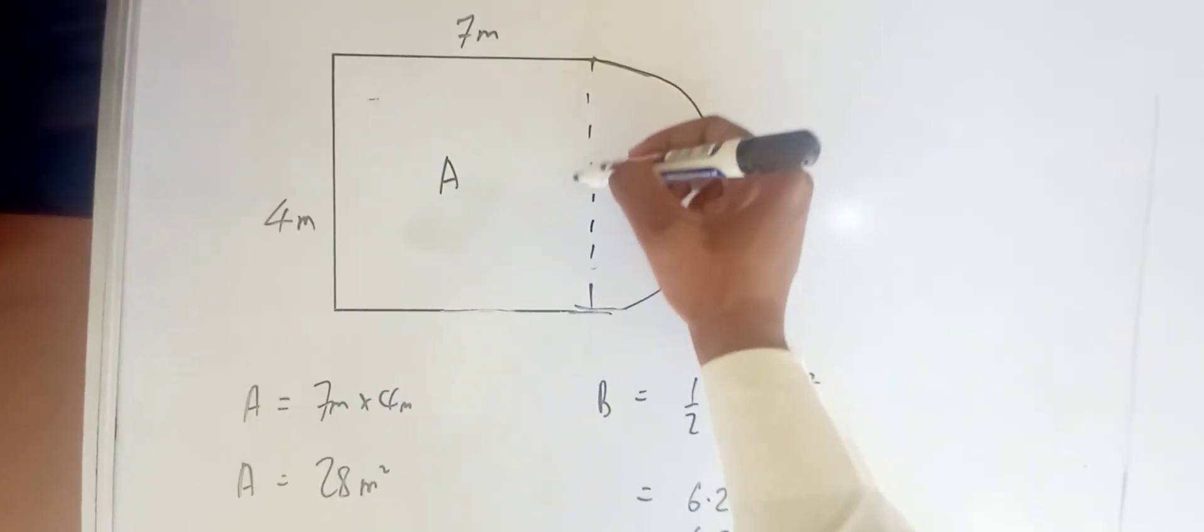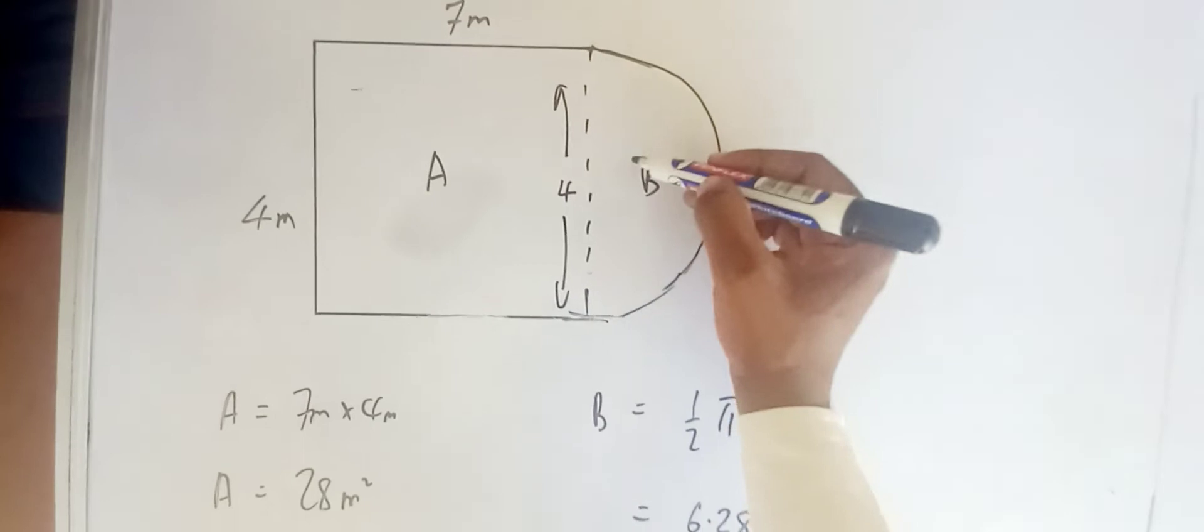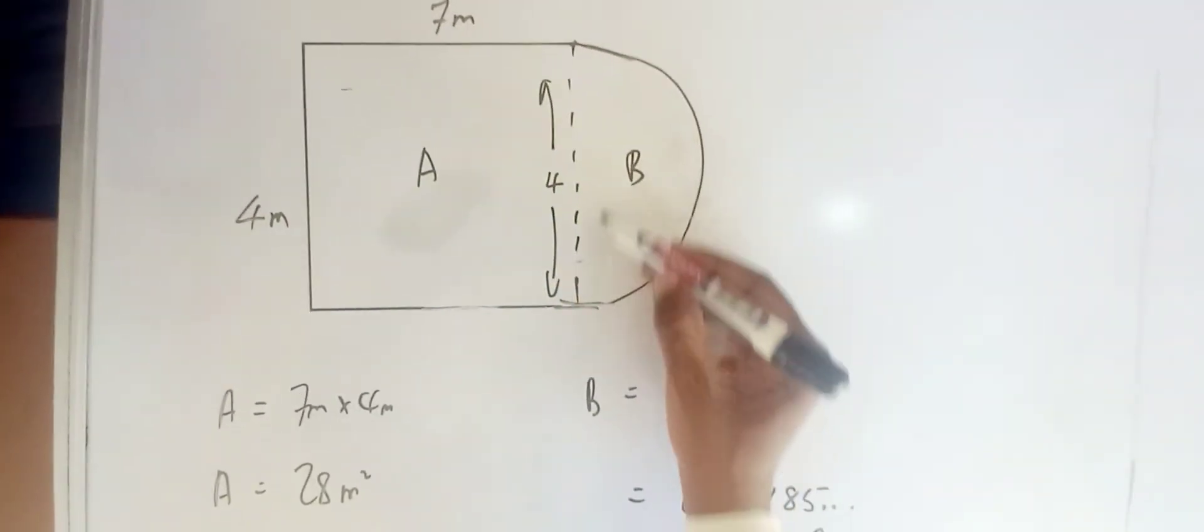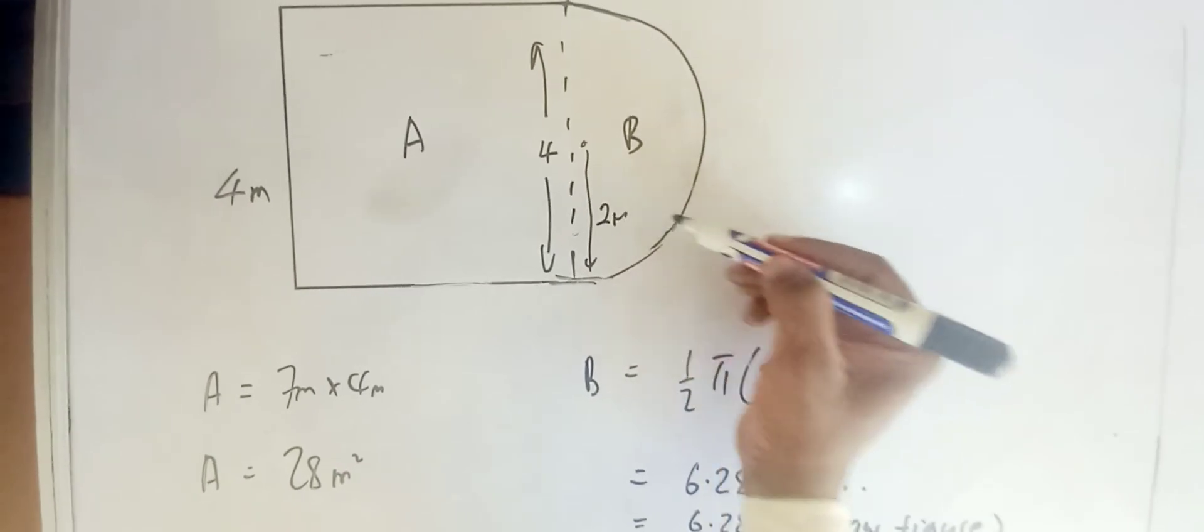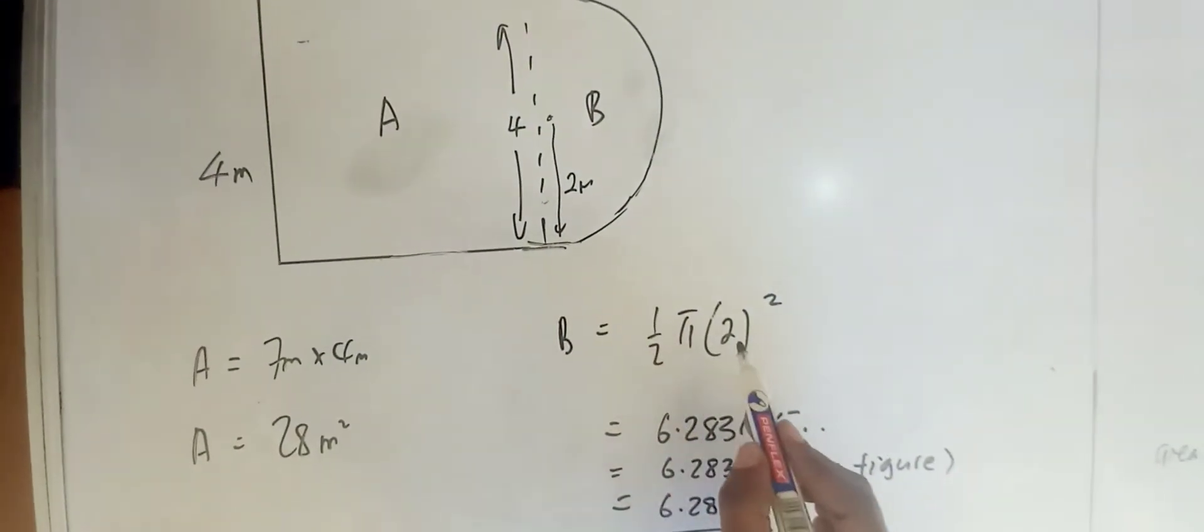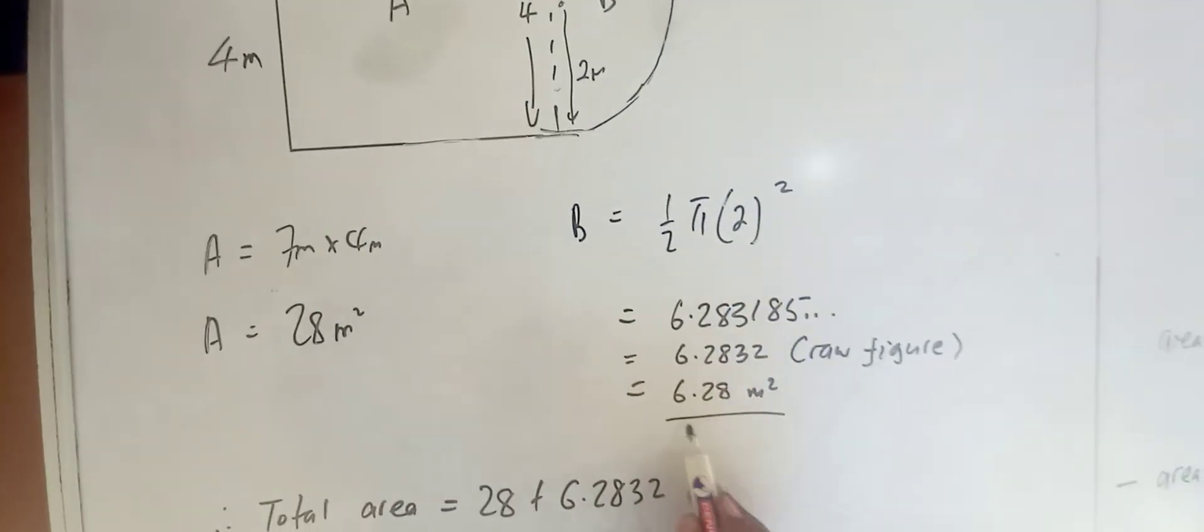You have this side also being 4 meters, and therefore that's the diameter, meaning the radius would be 2 meters. So hence, half pi r squared, and it will give us this answer if you punch in your calculations.